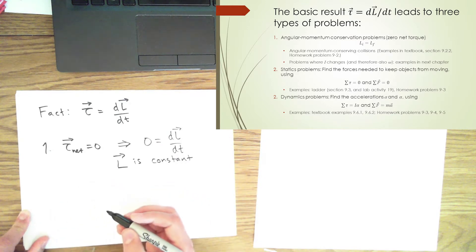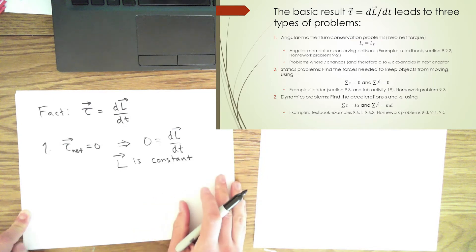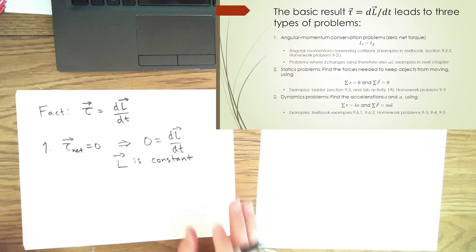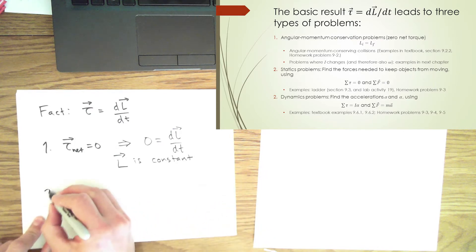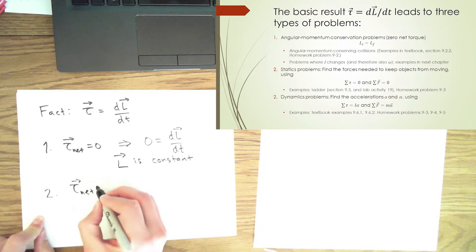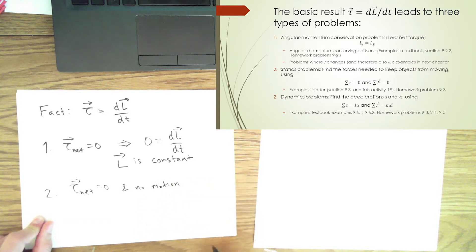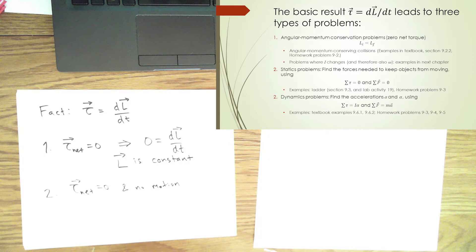A second kind of problem is statics. Statics, as it sounds, is a type of problem where we're not considering movement. Things are not moving, and the forces and torques in the problem are balancing each other. There's an example in the book about a ladder leaning against a wall and not falling down, where the forces and torques balance out and there's no motion.